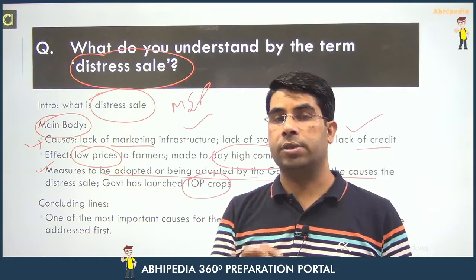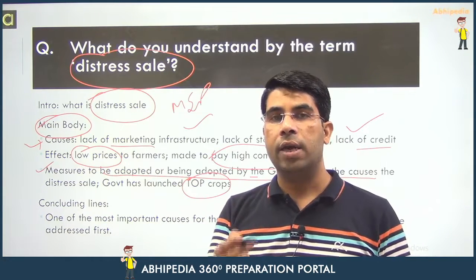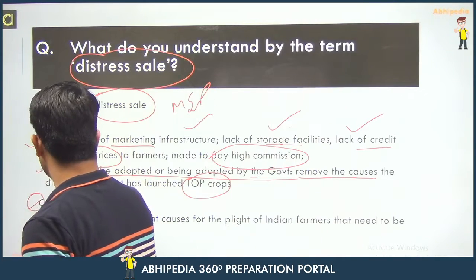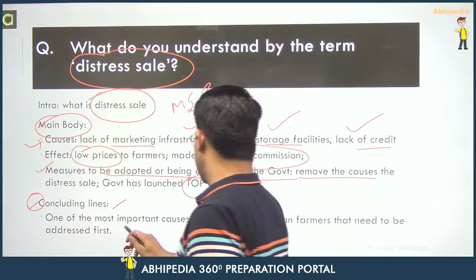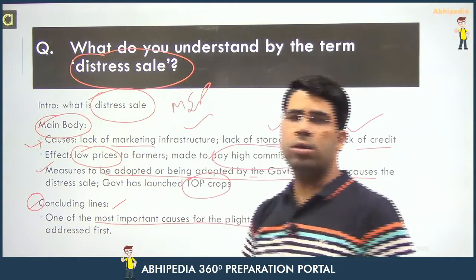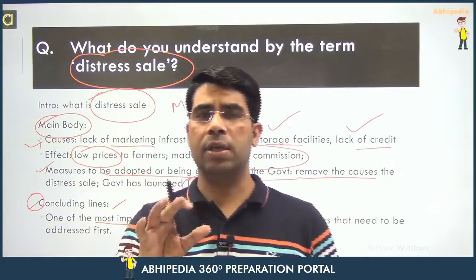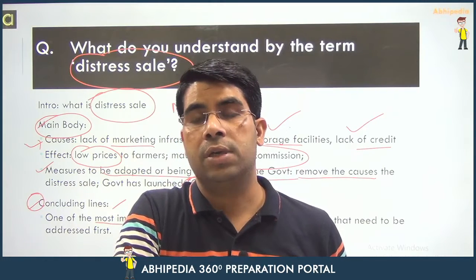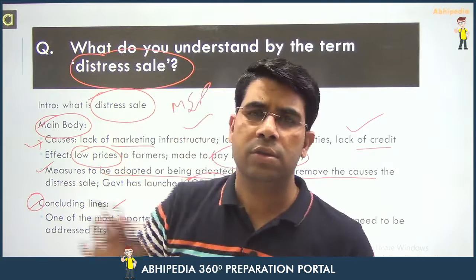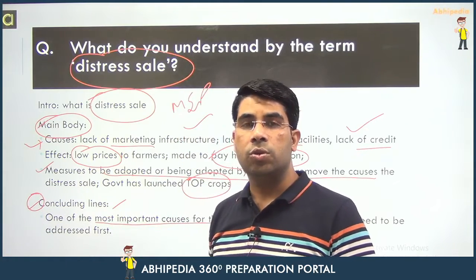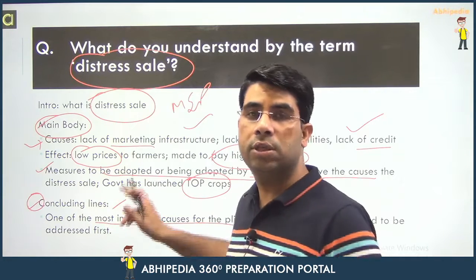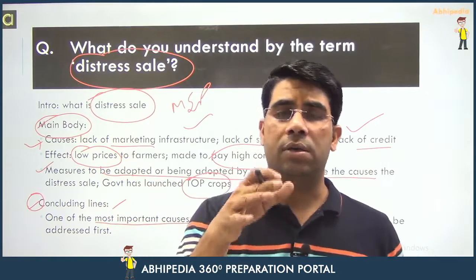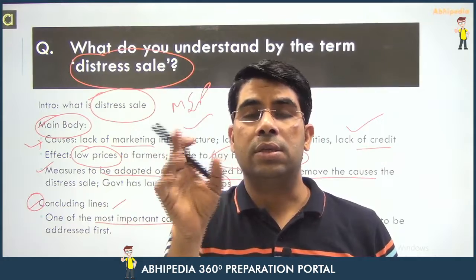So that is how to express what to write, how to write, and what not to write. Then comes the conclusion — the ending lines. So distress sale is one of the biggest reasons affecting agriculture. To promote agriculture you need to address this problem first, as this is not something fixed easily.